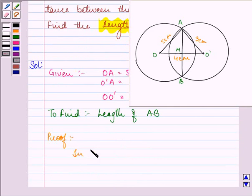Now in triangle OAO', that is this big triangle, we know the measurement of all three sides. So we can find out the area of this triangle by using Heron's formula.